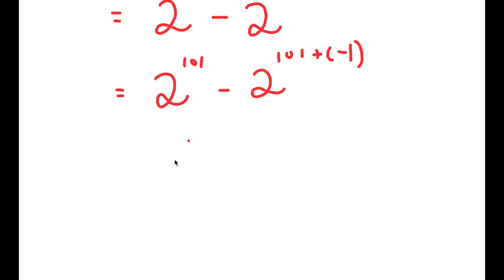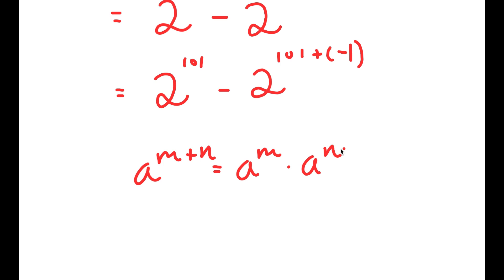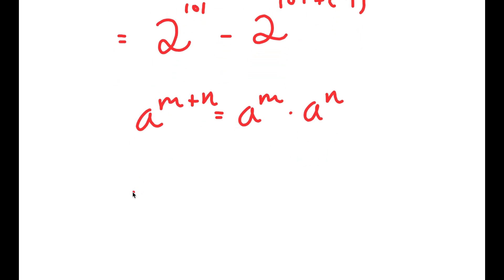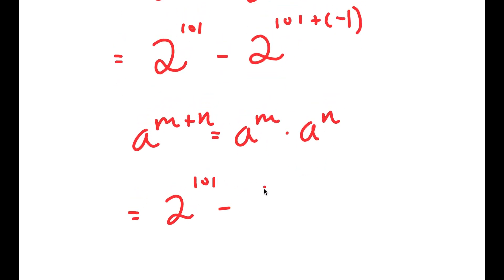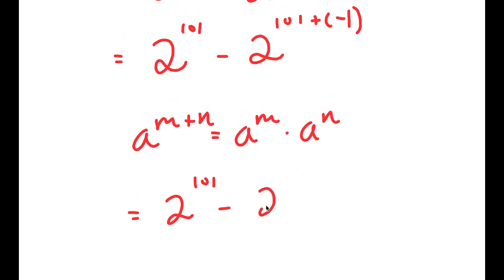If I use that property again, that states that a to the power of m plus n is equal to a to the power of m times a to the power of n, I get 2 to the power of 101 minus 2 to the power of 101 times 2 to the power of negative 1.